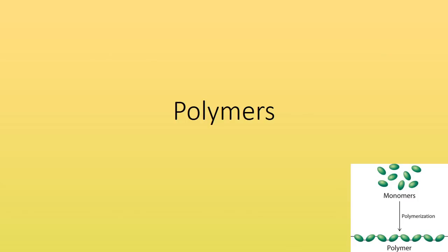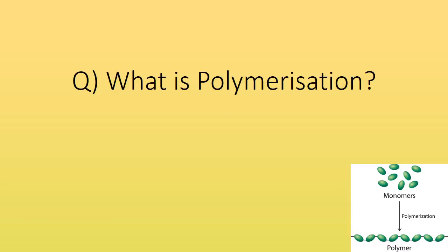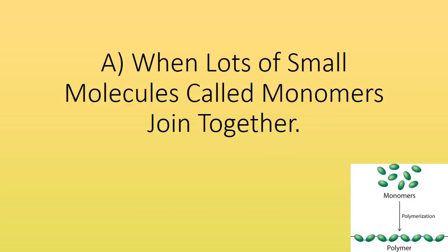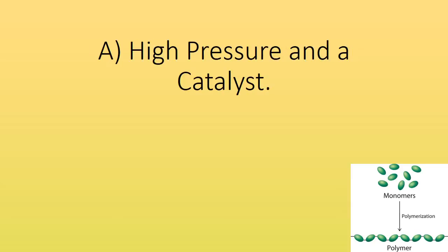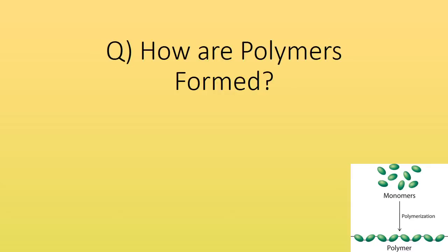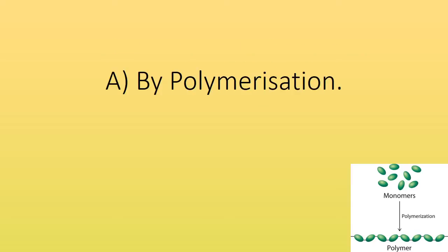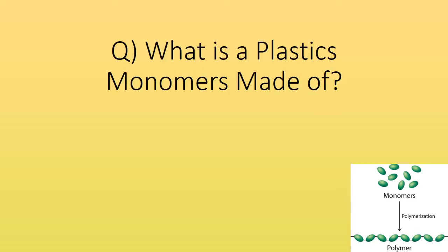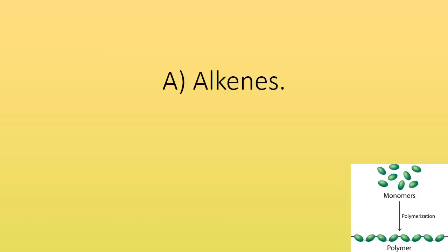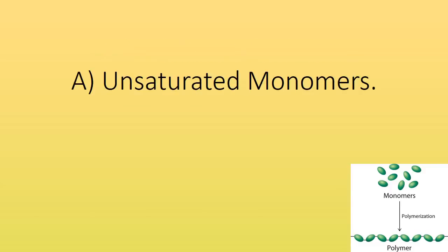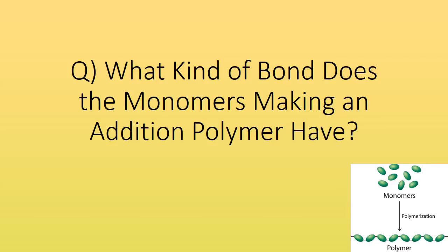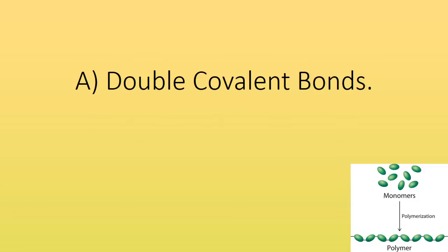Polymers. What is polymerisation? When lots of small molecules called monomers join together. What does it usually need? High pressure and a catalyst. How are polymers formed? By polymerisation. What is a plastic monomer made of? Alkenes. What are addition polymers made from? Unsaturated monomers. What kind of bond do the monomers making an addition polymer have? Double covalent bonds.